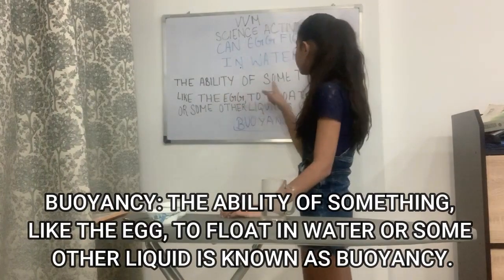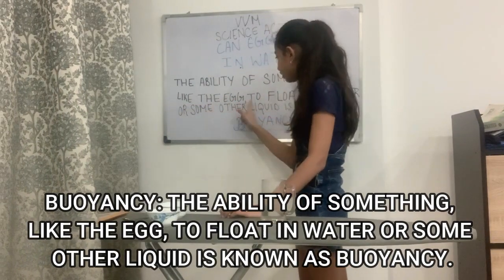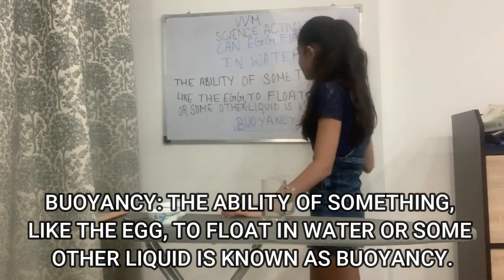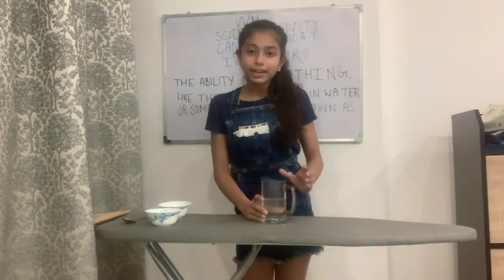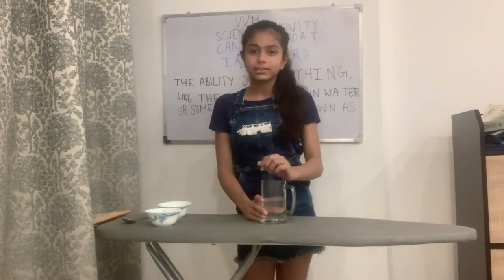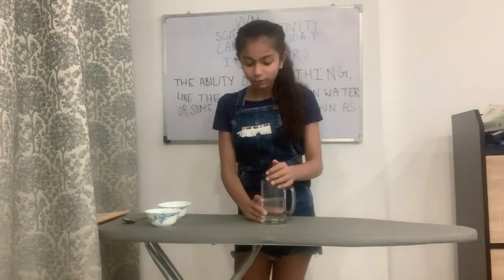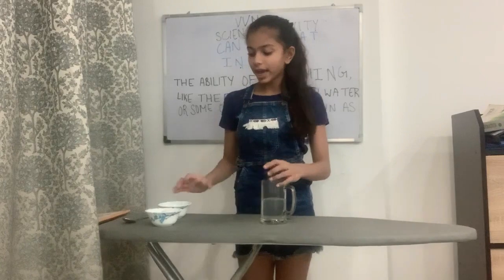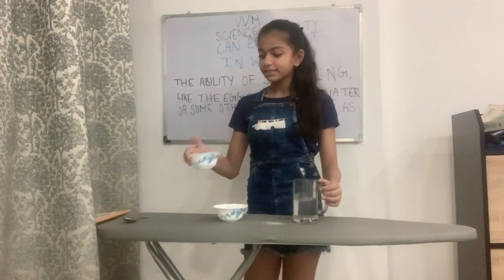The ability of something — like the egg — to float in water or some other liquid is known as buoyancy. My goal was to explain buoyancy to you in a correct way. I hope you understood this activity on buoyancy. If you want to try this, you can take fresh water, an egg, and some salt. Thank you.